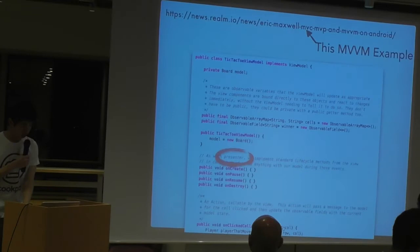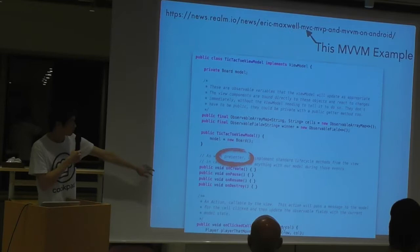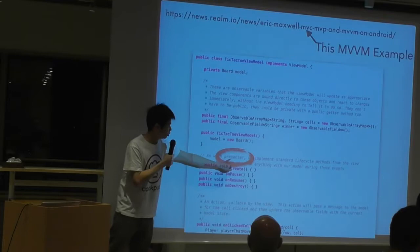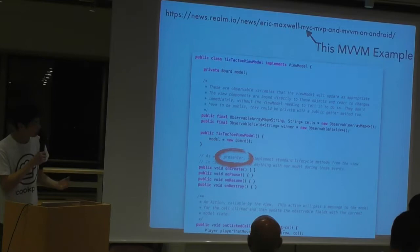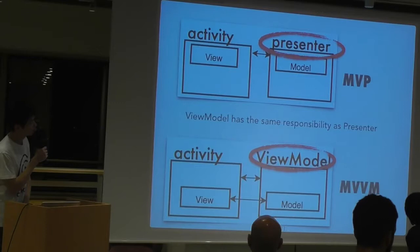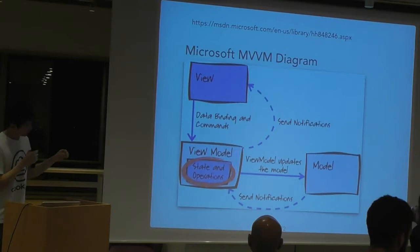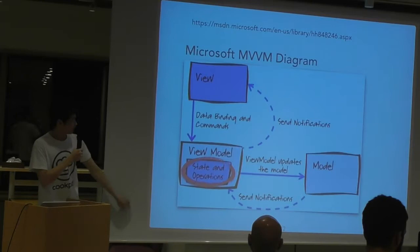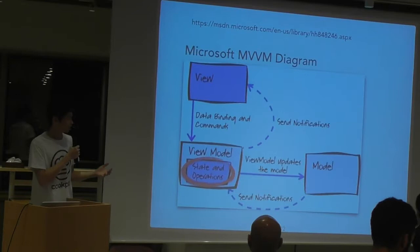I noticed when doing MVVM examples that some implementations have the view model doing the responsibility of the presenter. So I started to wonder: is this the correct implementation of MVVM? Slowly I realized that presenter and view model actually share the same responsibilities. I checked the origin of MVVM, which comes from Microsoft — and in their diagram the view model consists of state and operations. Operations are what the presenter is doing. So view model is actually sharing what the presenter does, plus carrying the state of the view.